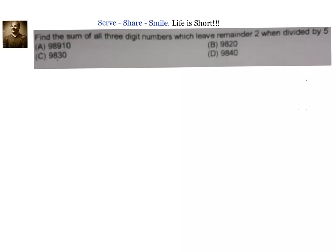Hello friends, welcome back. In this session, let us look at this problem related to arithmetic progression: find the sum of all three-digit numbers which leave remainder 2 when divided by 5. We have options: option A 98910, option B 9820, option C 9830, and option D 9840. We need to find the sum of all three-digit numbers which leave remainder 2 when divided by 5.